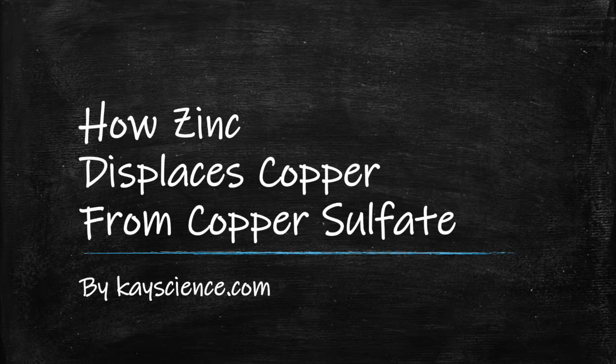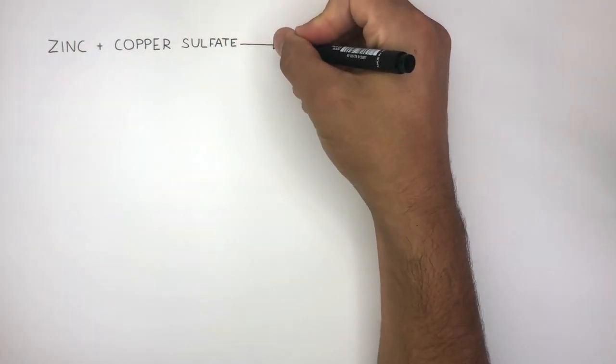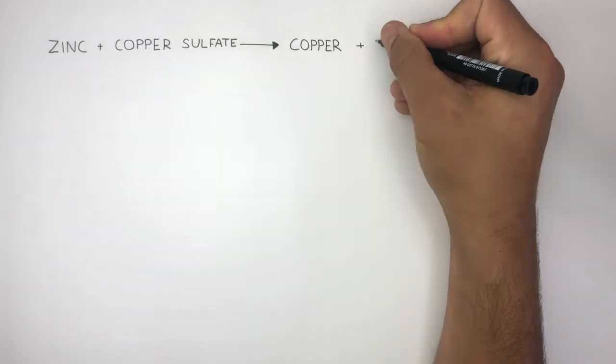How Zinc Displaces Copper from Copper Sulfate by KScience.com. When zinc reacts with copper sulfate, they react to form copper and zinc sulfate.